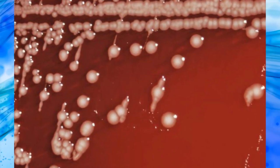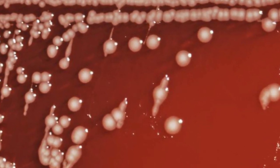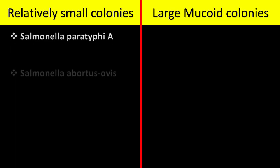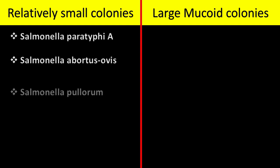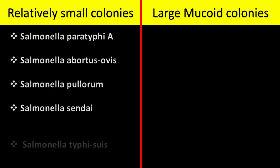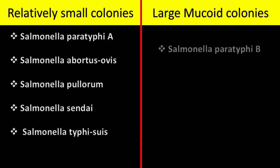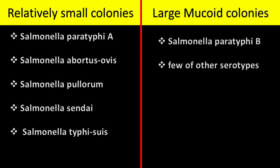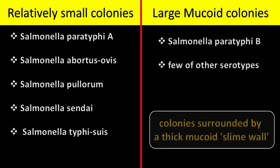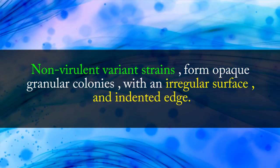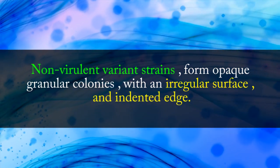Their size and degree of opacity varies with the serotype. For example, Salmonella Paratyphi A, Salmonella Abortus Ovis, Salmonella Pullorum, Salmonella Sendai, and Salmonella Typhi colonies are relatively small. Many strains of Salmonella Paratyphi B, and a few of other serotypes, form large mucoid colonies or colonies surrounded by a thick mucoid slime wall. Non-virulent variant strains form opaque granular colonies with an irregular surface and indented edge.